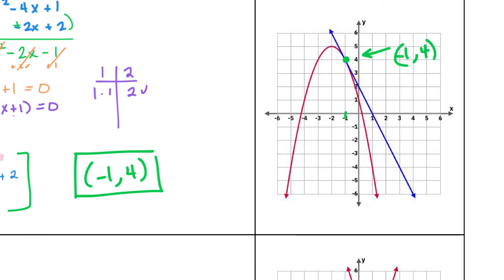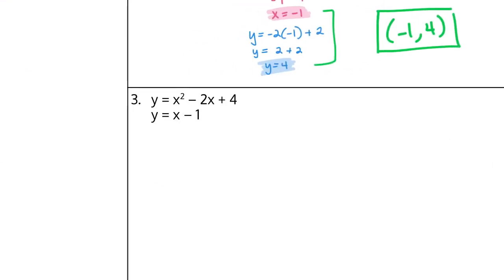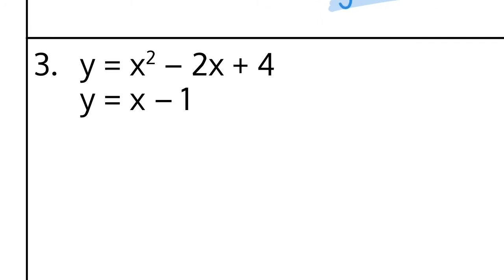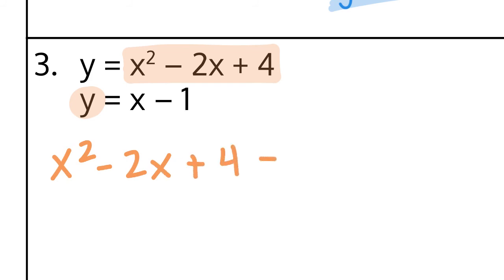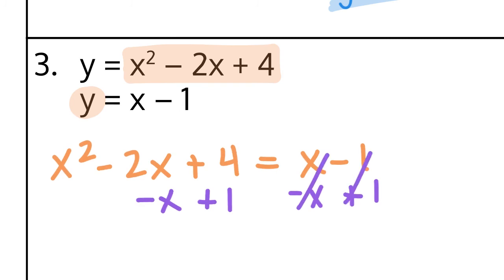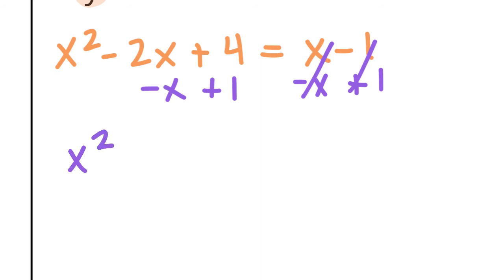For our last example: y equals x squared minus 2x plus 4, and y equals x minus 1. I'm going to go back to substitution. Both equations are set up with y equals, so I can plug the first expression into the y in the second equation, giving x squared minus 2x plus 4 equals x minus 1. We want this to equal 0, so subtracting x and adding 1 to both sides, I'm left with x squared minus 3x plus 5 equals 0.